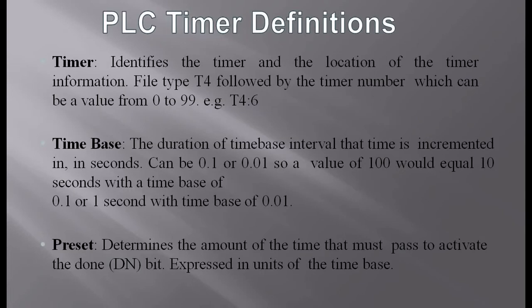Different definitions for a PLC timer: the timer identifies the timer and the location of the timer information — file type T4, followed by the timer number, which can be a value from 0 to 99. So up to 100 timers can be used in a single program. T4 is the particular input/output file available in the timer program.